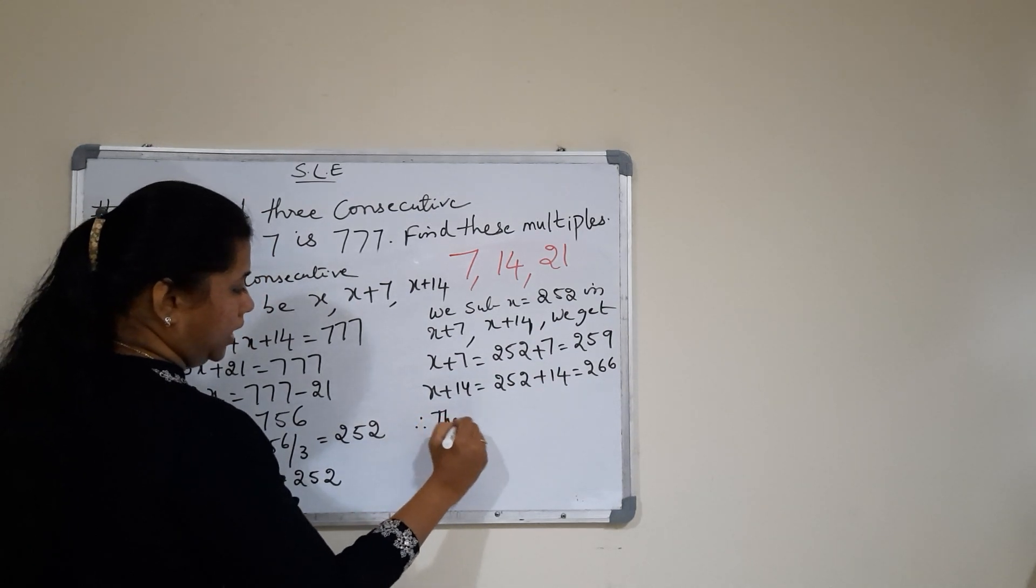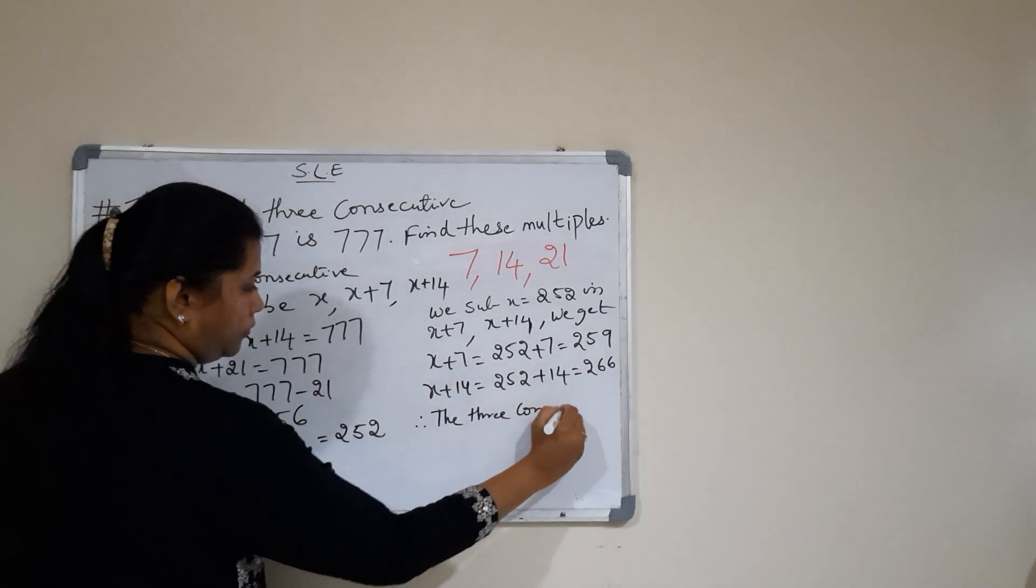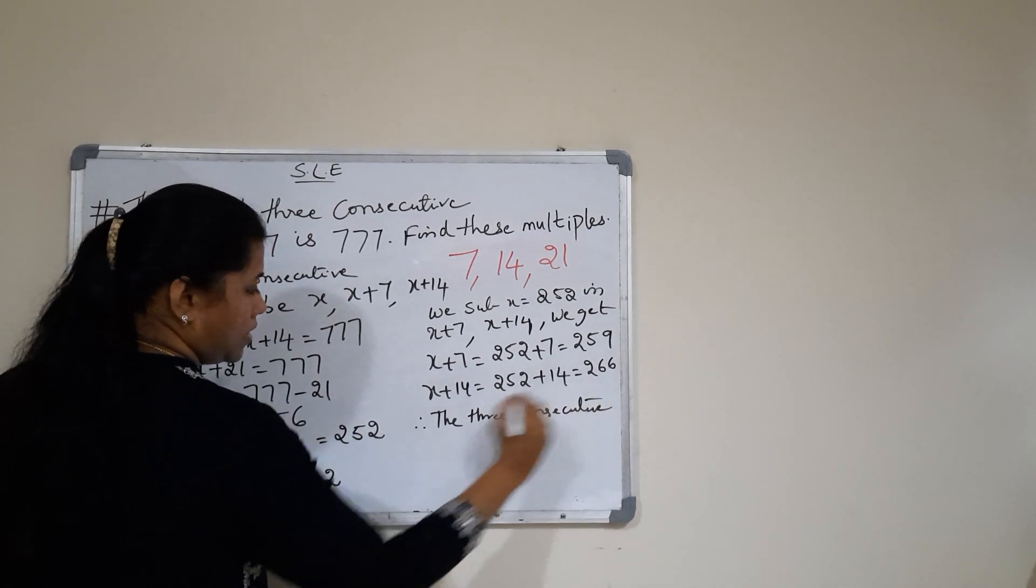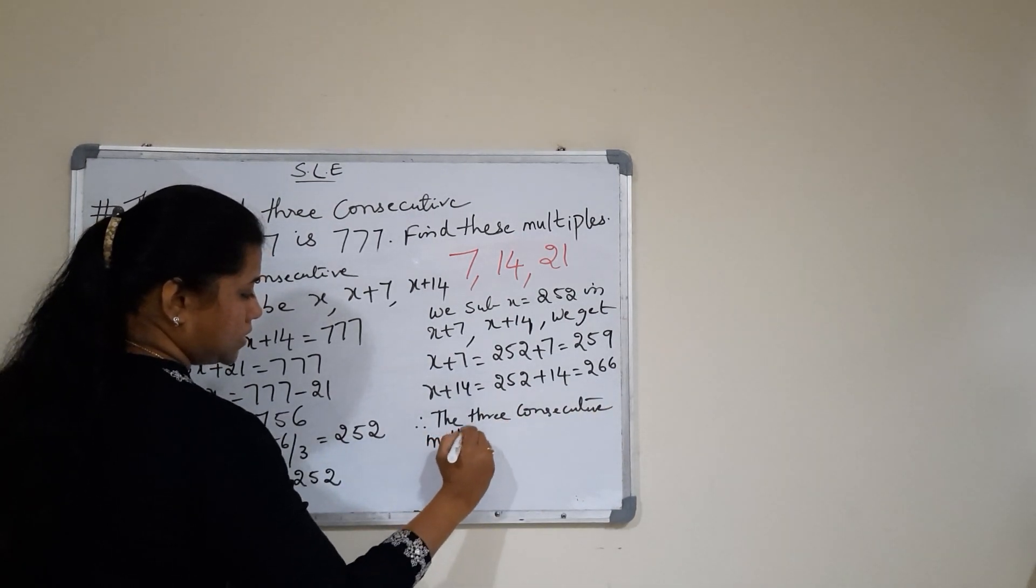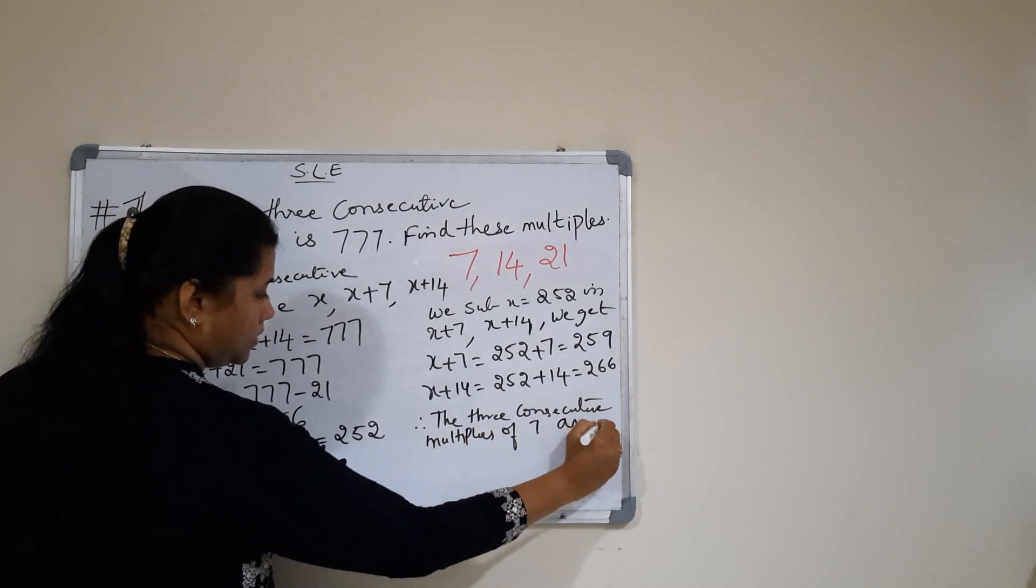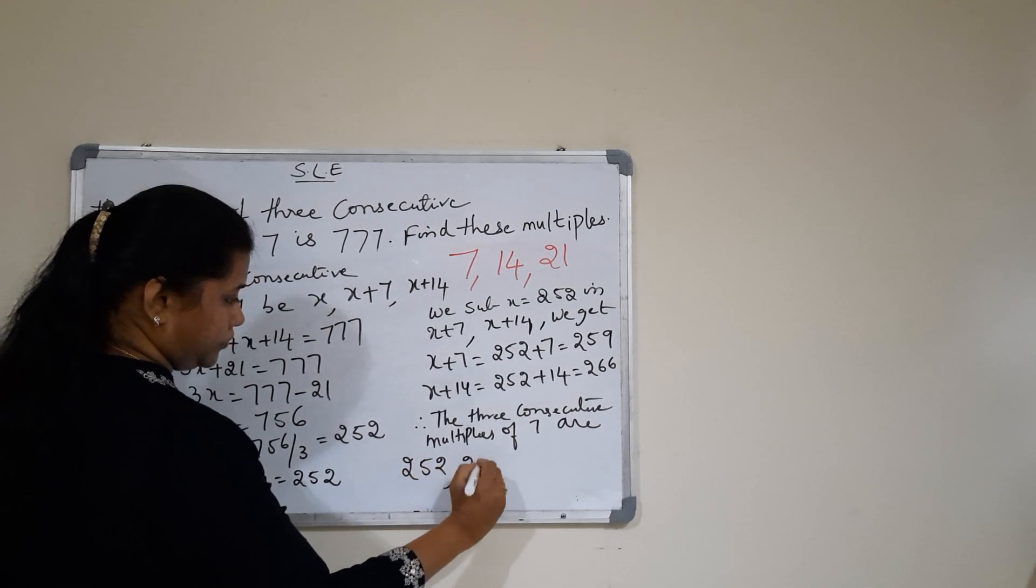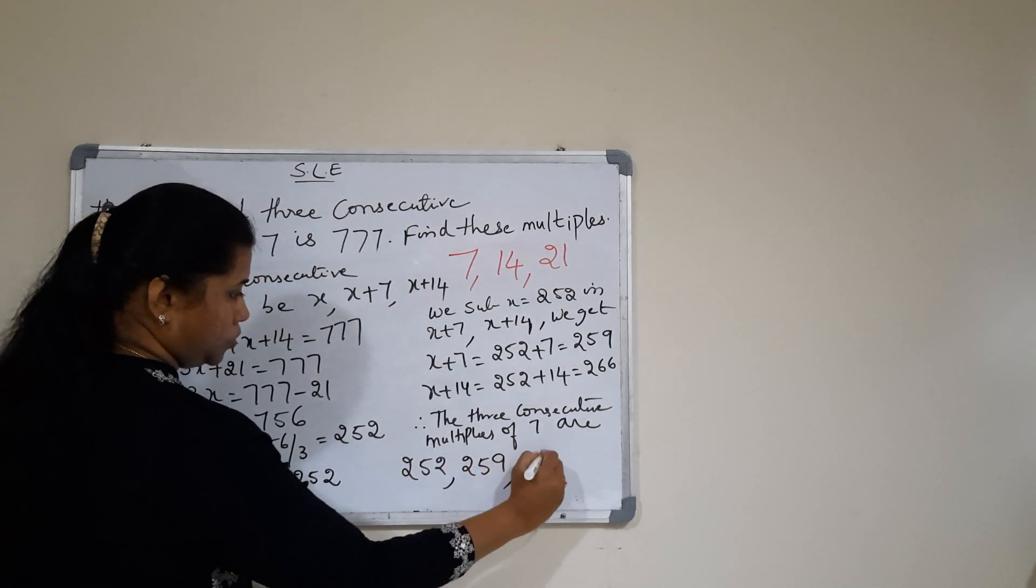Therefore, the three consecutive multiples of 7 are 252, 259, and 266.